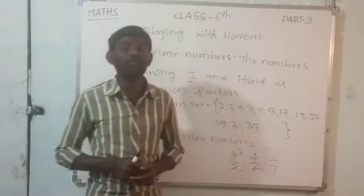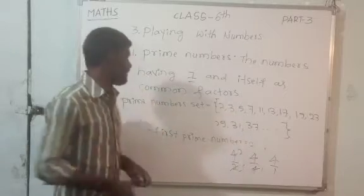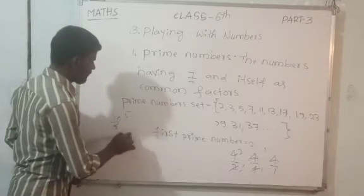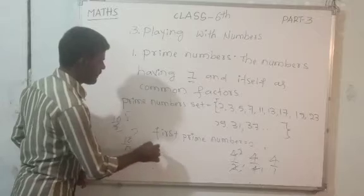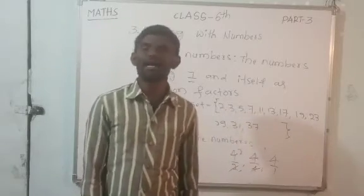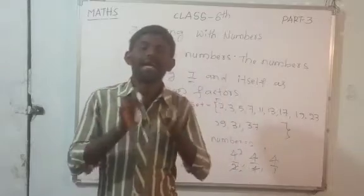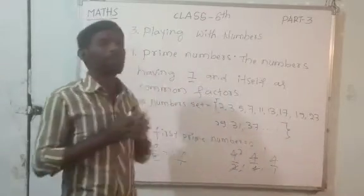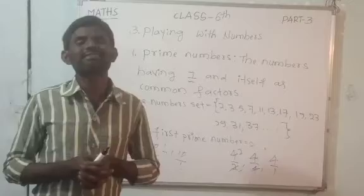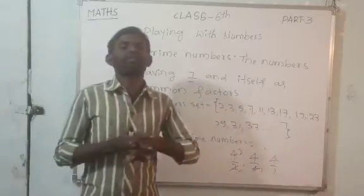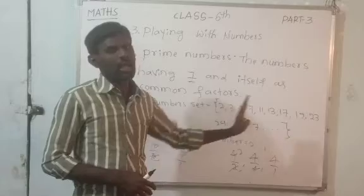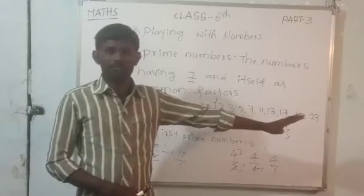Here, 10 — I did not consider 10 as a Prime Number. Because 10 is divisible by 2, by 5, and by 10 also. So 10 has 4 factors. That is why 10 is not a Prime Number — 10 is a Composite Number. So, Prime Numbers means the numbers having only 1 and itself as factors. The Prime Numbers set begins with 2, and goes up to infinity.